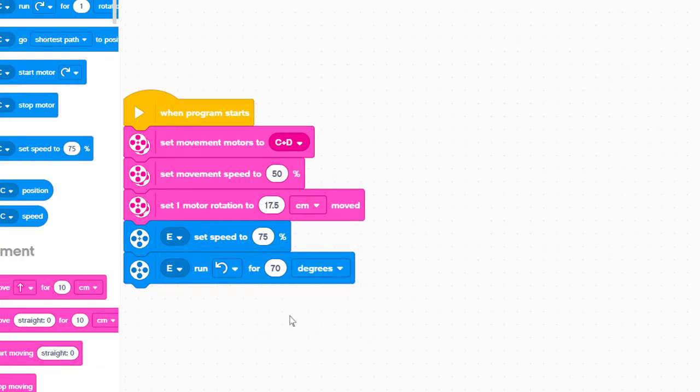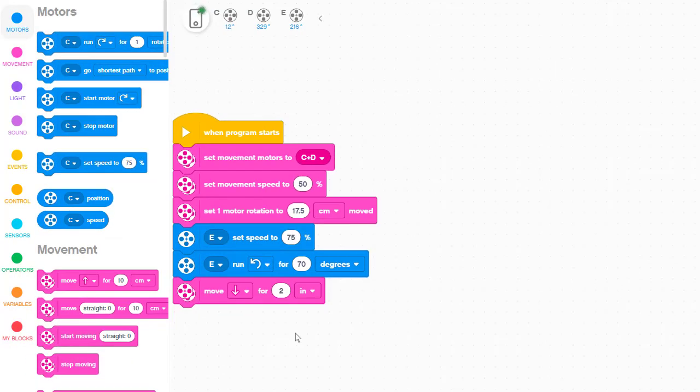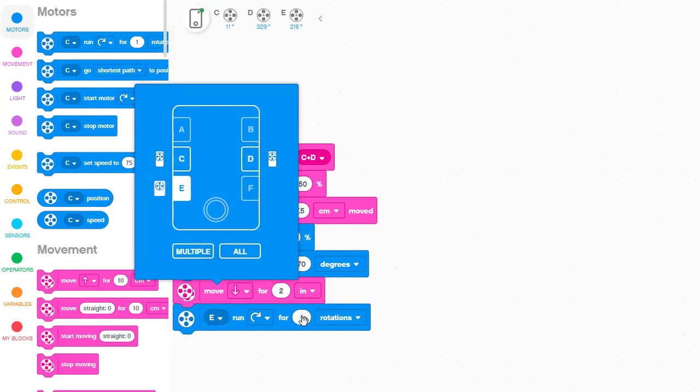Now let's have the robot back up two inches to pull Yellow out of the box. Now let's cause the motor to turn the other way for 70 degrees to release Yellow.